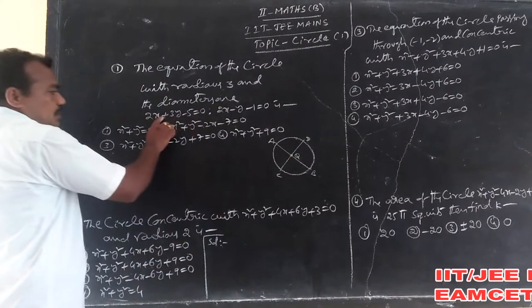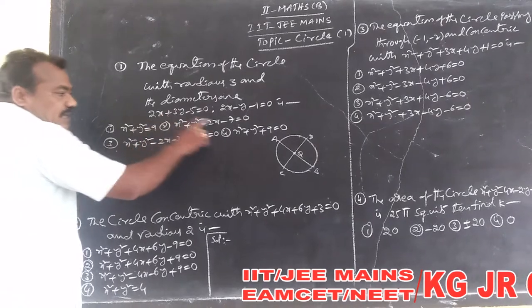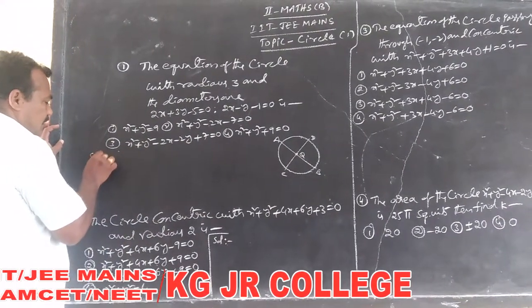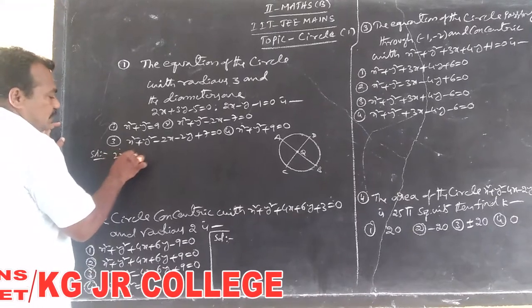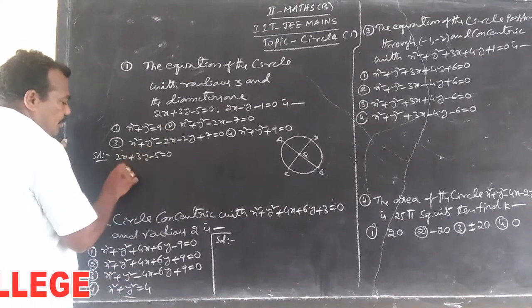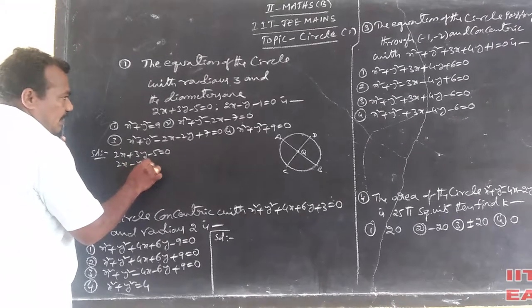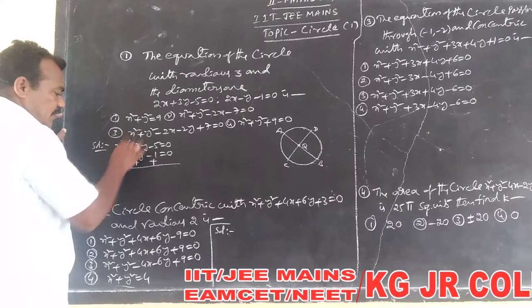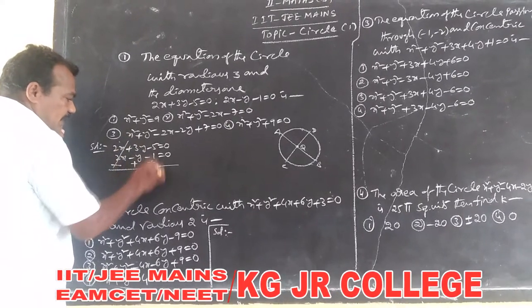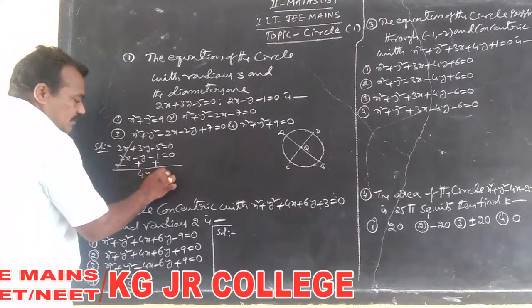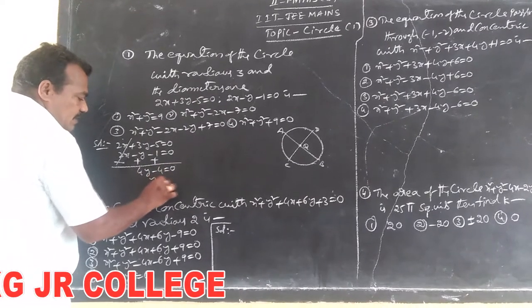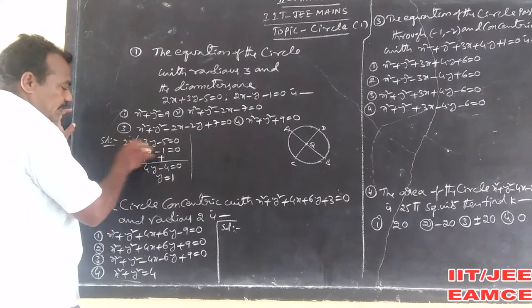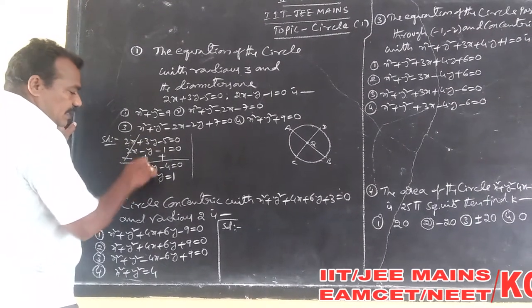We solve these two equations. The diameters are the equations. Then we get the center of the circle. We solve: 2x plus 3y minus 5 is equal to 0, and 2x minus 5y minus 1 is equal to 0. Subtracting, the 2x terms cancel. This gives 4y minus 4 is equal to 0, so y is equal to 1.